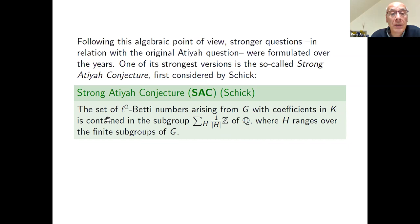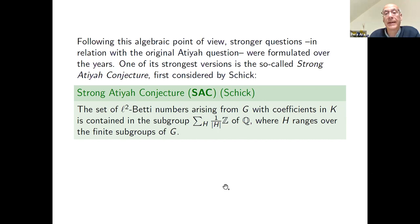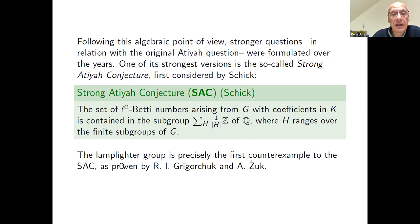The strong Atiyah conjecture states that the set of L2-Betti numbers arising from a group G with coefficients in a subfield K is contained in the subgroup generated by the inverses of the orders of the finite subgroups of G. This claims that all these numbers are contained in a subgroup of the rationals — in particular, all L2-Betti numbers are rational, but the conjecture is stronger. In this generality, the conjecture has been shown to have a negative answer; the first counterexample is the Lamplighter group.